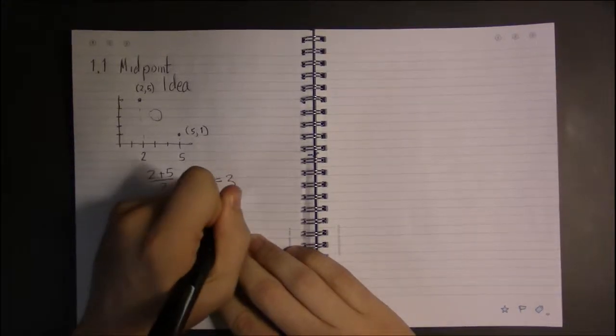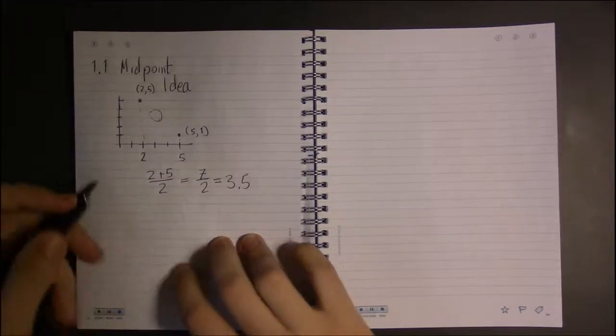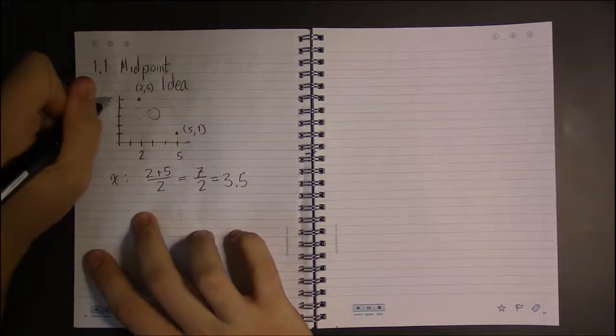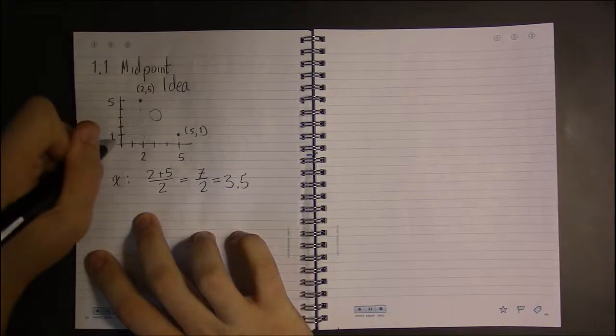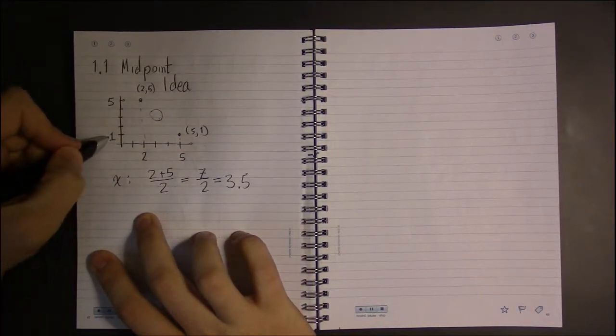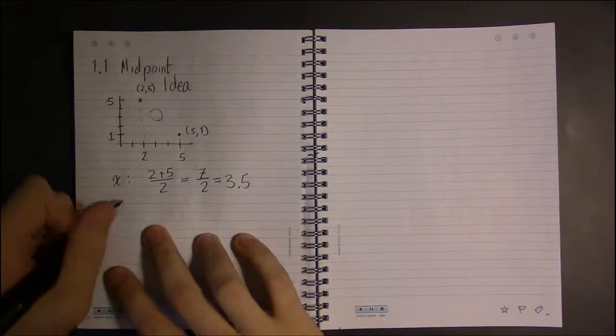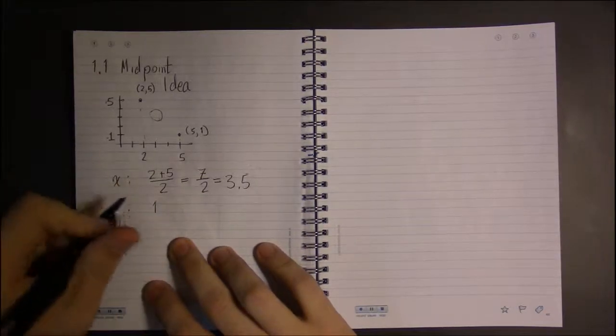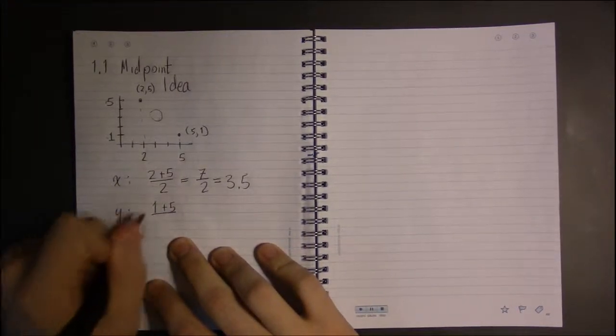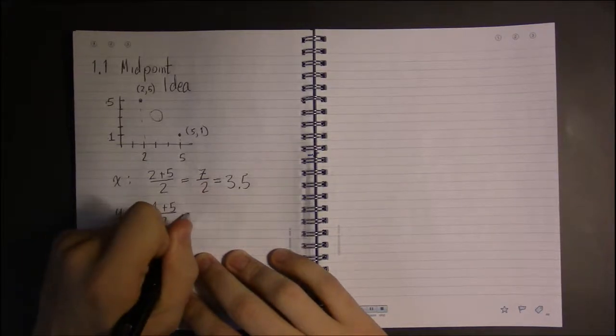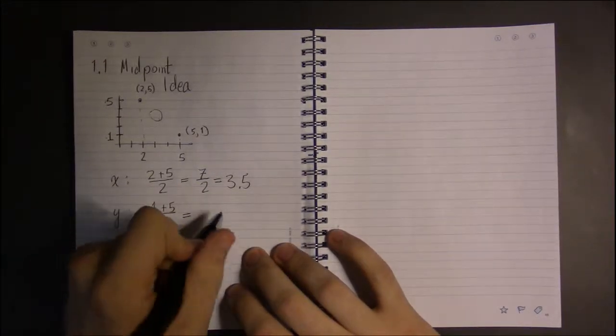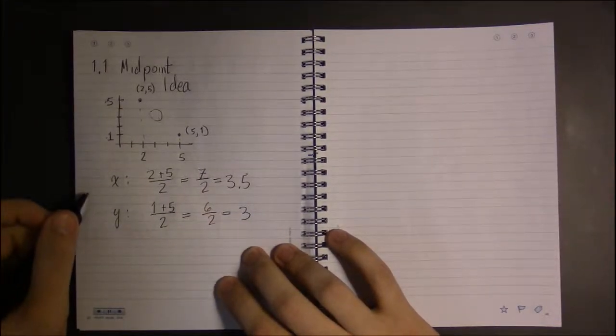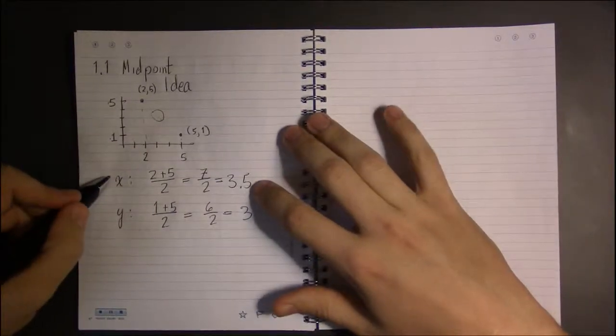And then for y, this is at 5 and this is down here at 1. What number is halfway between 1 and 5? Well, you do the same thing - you just average. So if we average 1 and 5, we end up with 6 over 2, which is 3. And that's it, the midpoint